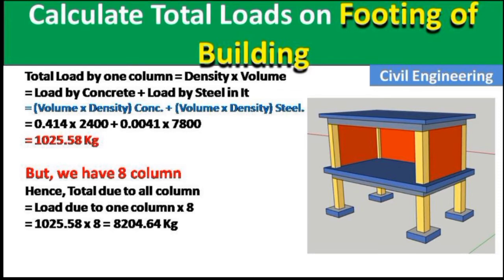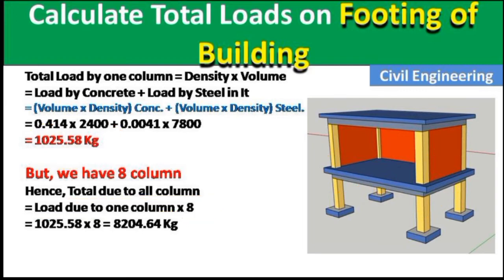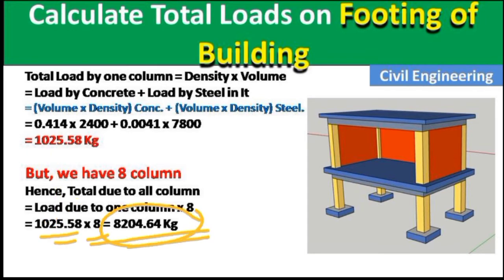We have 8 columns total — columns 1 through 8 as seen in the picture. So the total load due to all columns = load of 1 column × 8 = 1025.58 × 8 = 8204.64 kg.